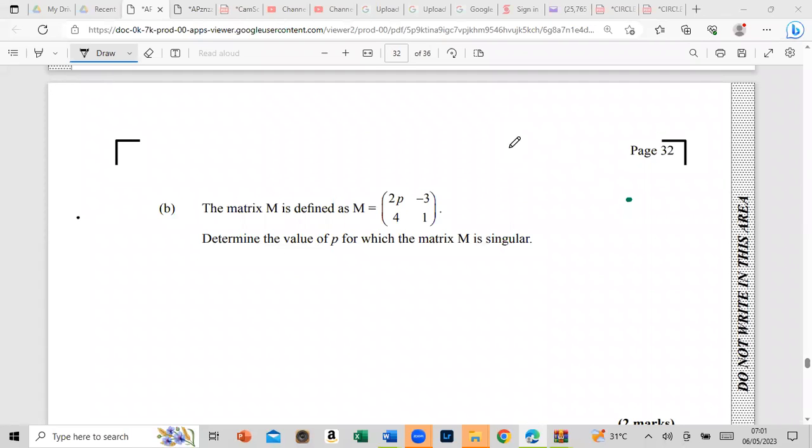Hi guys, welcome back to another in the series. I am your presenter OX-Penix. Let's go. Alright, so we have a matrix. The matrix is defined as M equals 2p minus 3, 4, 1. Determine the value of p for which the matrix M is singular. Try that one guys.